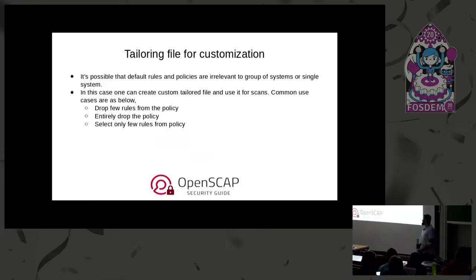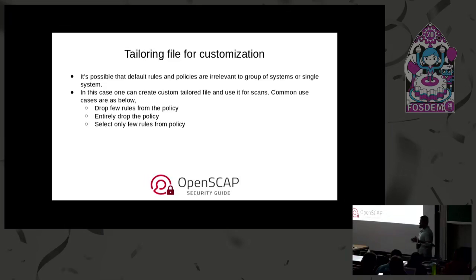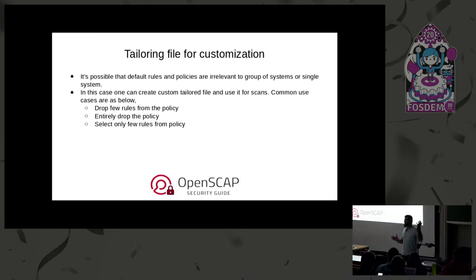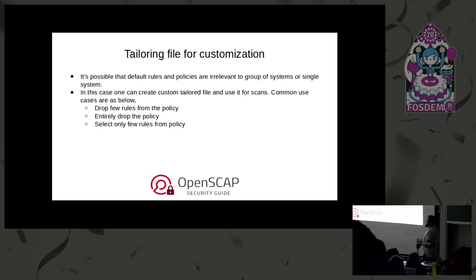When getting content from Git, most of the time you want to customize something — enable or disable rules. The first instinct is to open the original file and modify it. OpenSCAP provides a better way: don't modify the original content; instead, create a separate customization file, and when you run SCAP, use both files together. You're not touching the original content but you still have your customizations. You can select or drop rules from profiles as needed.